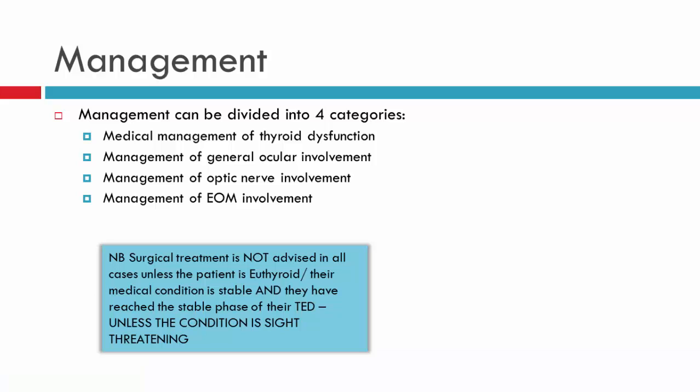In relation to the management of patients with thyroid eye disease, we could divide this into four categories. One, we have the medical management of the thyroid dysfunction. Then we have patients with general ocular involvement, where for instance the cornea is being affected. Then we have patients who may have the optic nerve being threatened by compression, with a series of management options. And finally, those who have extraocular muscle involvement whereby it's resulting in diplopia and restricted eye movements.